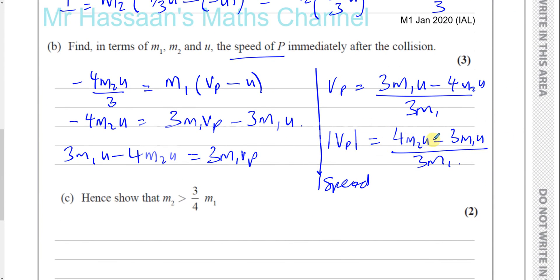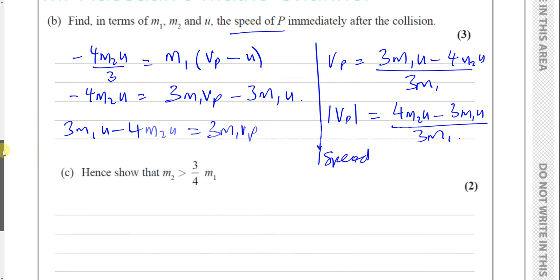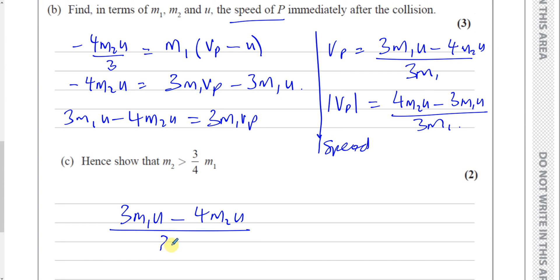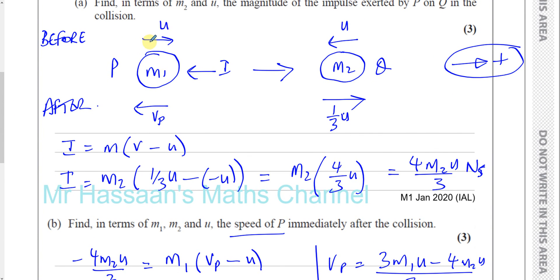The question then says: hence show that M2 is greater than three quarters M1. We take our velocity, which is three M1 U minus four M2 U over three M1. We know this velocity is negative because the particle was going in the positive direction and then changed direction. So this expression must be less than zero.